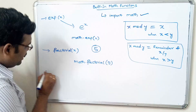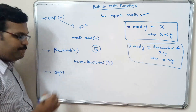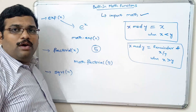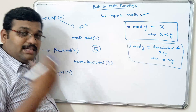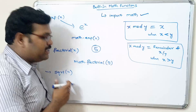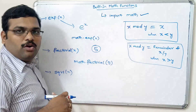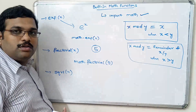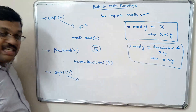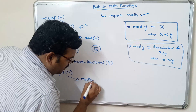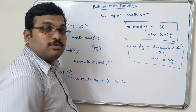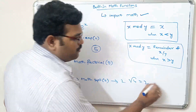Next, similarly, square root — sqrt(x). We can directly get the square root, just like in C language where we also have the sqrt function and include the math.h header file. Here similarly we have to import the math package. To use sqrt, we write math.sqrt(4), which will return 2.